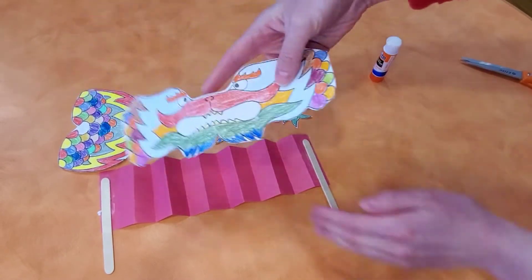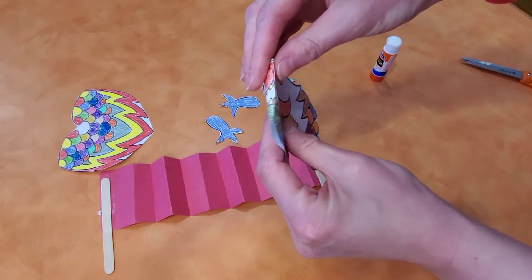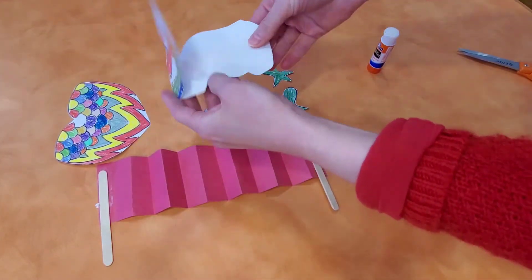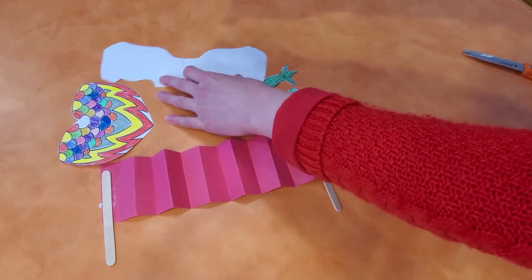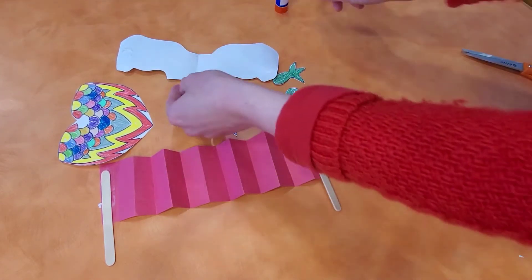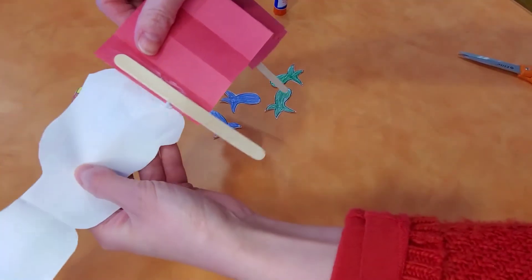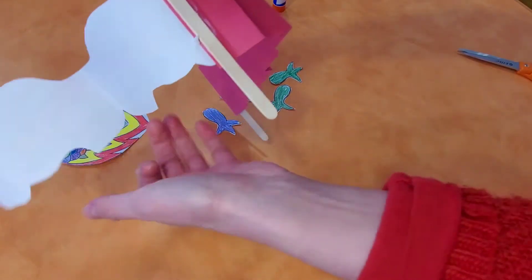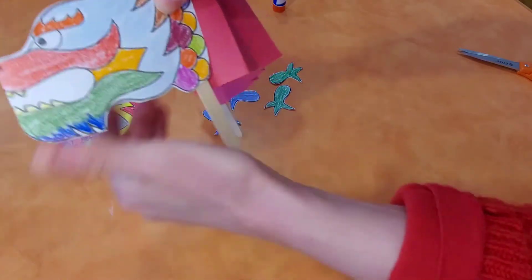And then we're going to take the head, we're going to fold it in half like this. And then we're going to glue this part and this part. Put glue there. Some glue there. We're going to put it between the popsicle stick. One on this side, one on this side, one on that side. So that's the head of the dragon.